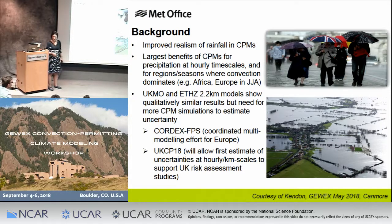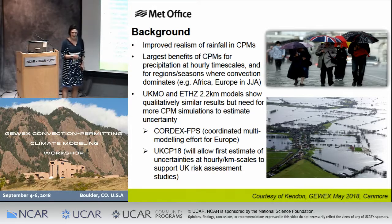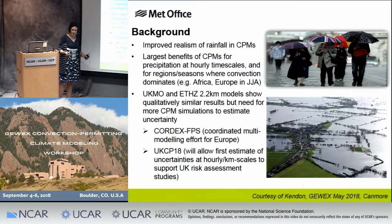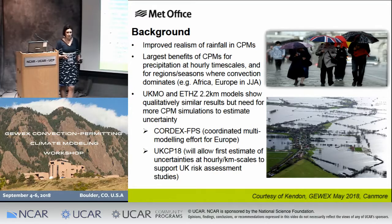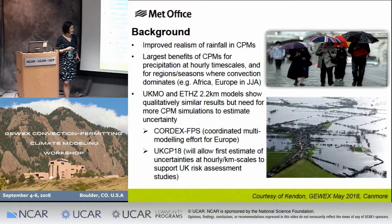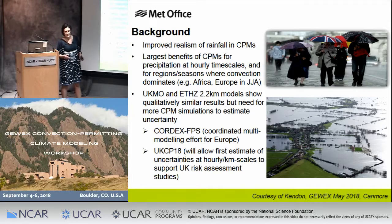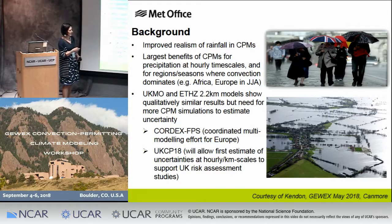Since we've been talking about how good the convection-permitting models are, I'll start from the conclusion that Lisey Kenden presented at the last JERVEX meeting in Canmore. The finding from a larger domain confirmed what was found in a smaller domain: the convection-permitting model improves the representation of precipitation, especially at sub-daily scale in regions and seasons where convection dominates. Two different models with completely different dynamical cores and physical packages — the UK Met Office model and ETH run over Europe — show similar results.